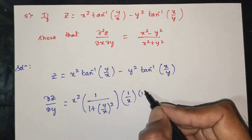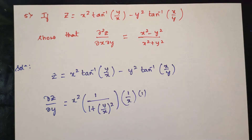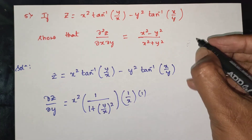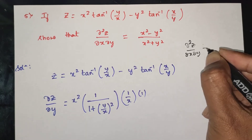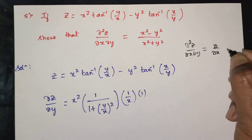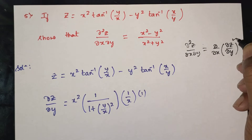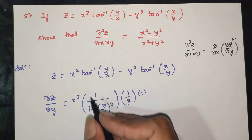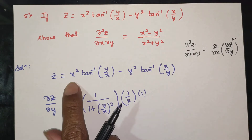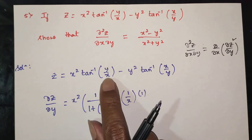Continuing the differentiation of y, we then set up dou square z by dou x dou y, which is dou by dou x of dou z by dou y. For the second term, differentiating with respect to y, x square is constant: 1 by 1 plus y by x whole square, into y by x.